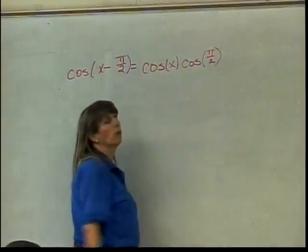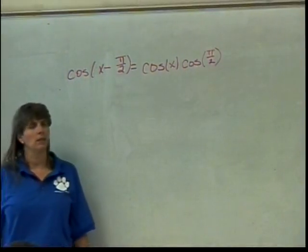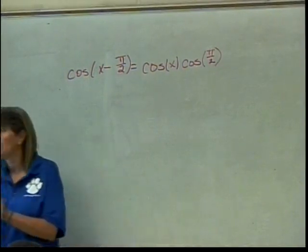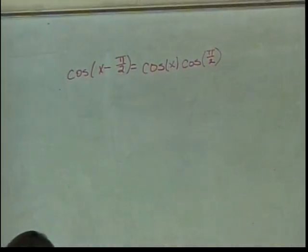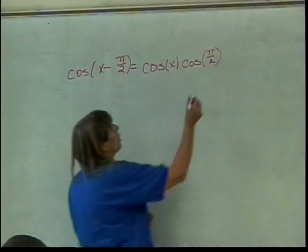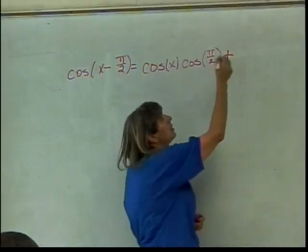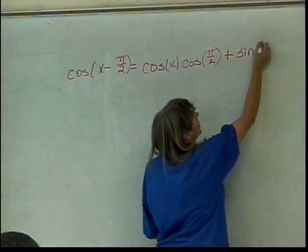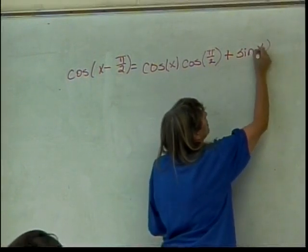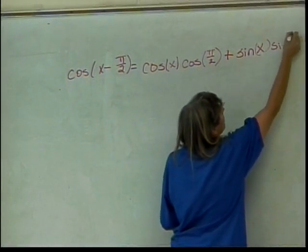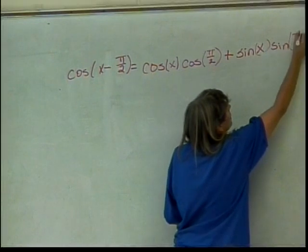Then what do I put here, plus or minus? Plus. Here, that is a minus, that means this is the formula I'm using, the one with the bottom. So over here I pick the bottom sign, so that's the plus sign. So I'll put in a plus. And then what do I have? Sine of x, and times the sine of pi over 2.